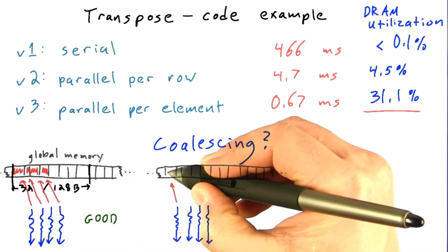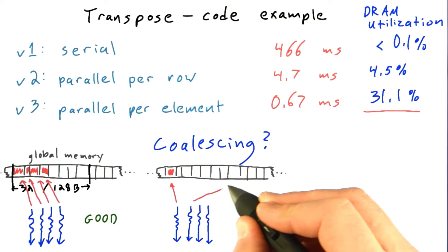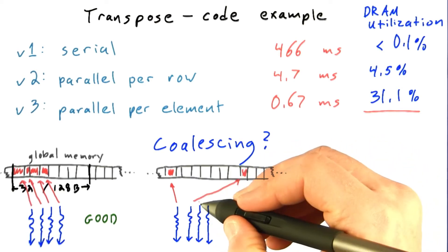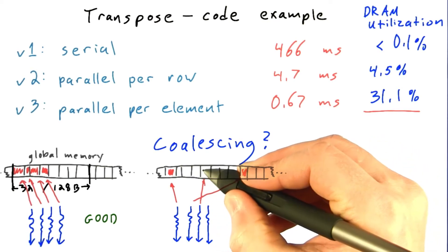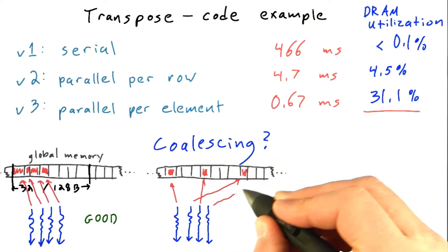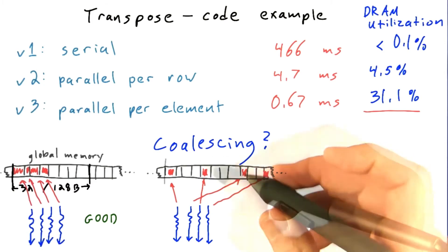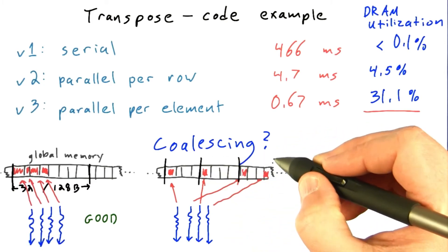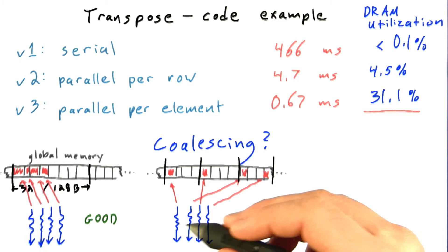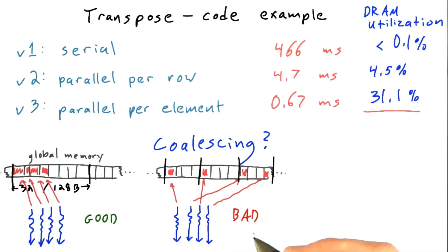And clearly if the threads in a warp are reading and writing completely random locations in memory, then you're going to get poor coalescing. So if these accesses are spread out all over the memory, then the total number of chunks of memory that we have to read could be as large as the number of threads in the warp. So a random access pattern clearly leads to bad coalescing.